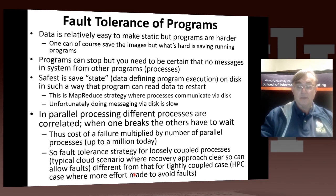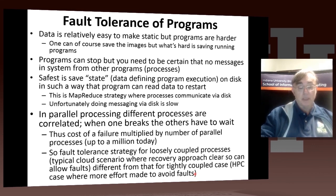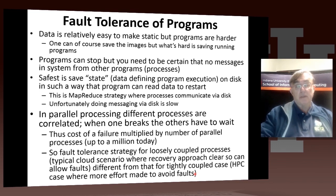In parallel computing, fault tolerance becomes very tricky because you have multiple processes running together. When one process breaks, all processes have to wait for it, so the cost of a failure is multiplied by the number of parallel processes — on a modern supercomputer, that could be a million-way multiplier. The cost of synchronization makes fault tolerance much more expensive for parallel processes. That's one reason HPC clusters put in a big effort to avoid faults: if you're running a million cores on a single job and one core breaks, the other 999,999 cores wait.